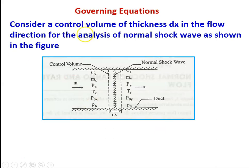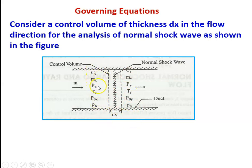We derive the governing equations for the shock wave. We take a control volume — a constant area duct — and assume there is a normal shock wave standing at a cross-section of the pipe. The thickness is dx, very very small — we said the thickness of the shock wave is in microns. The mass flow rate is m, and we have properties on the upstream and downstream sides of the duct. On the upstream side, we have velocity Cx, Mach number Mx, pressure Px, temperature Tx, stagnation pressure POx, and density Rhox. Similarly, on the downstream side, we have all the corresponding properties.